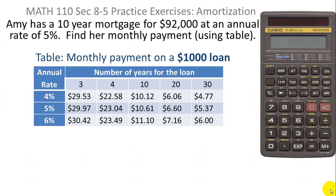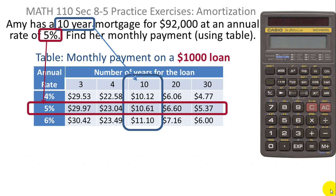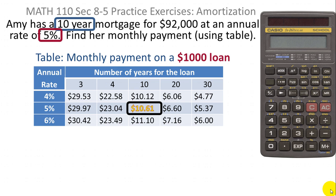Amy has a 10-year mortgage for $92,000 at an annual rate of 5%. Find her monthly payment using the table below. This table gives us the monthly payment on a $1,000 loan. In this particular problem, we know it's a 10-year mortgage, so we'll use the column for 10 years. We also know the rate is 5%, so we'll use the row for 5%. The number we're interested in is $10.61.